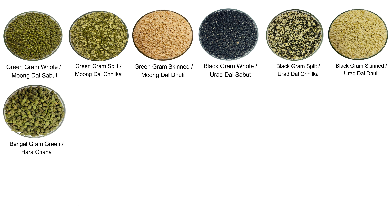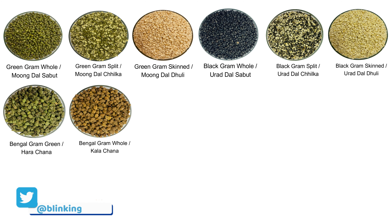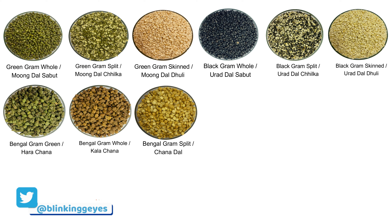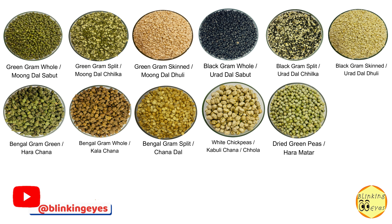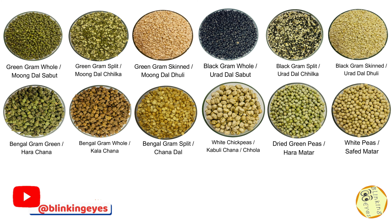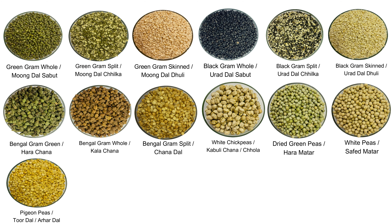Bengal gram green, or hara chana. Bengal gram whole, or kala chana. Bengal gram split, or chana dal. White chickpeas, or kabuli chana. Red-green peas, or hara chana. White peas, or safed chana. Pigeon peas, or tur dal, har dal.